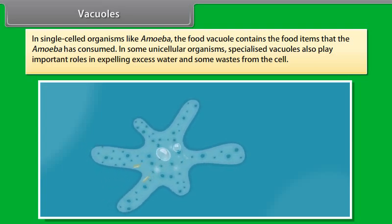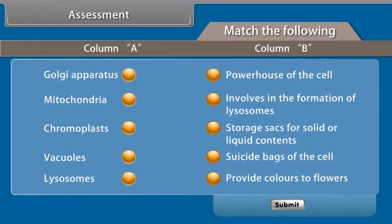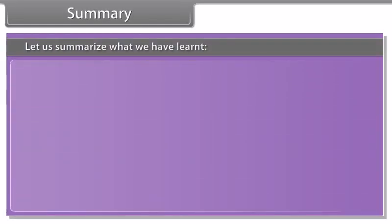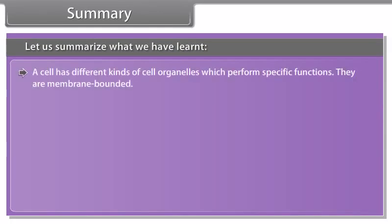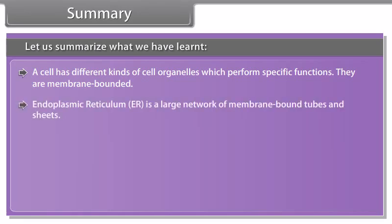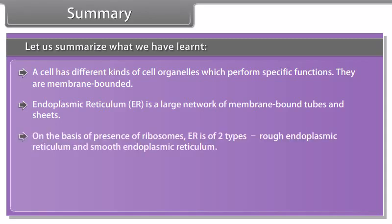Vacuoles are storage sacs for solid or liquid contents. In animal cells, the size of vacuoles is small, while plant cells have very large vacuoles. The central vacuoles of some plant cells may occupy 50–90% of the cell volume. In plant cells, vacuoles are full of cell sap and provide turgidity and rigidity to the cell. Many important substances for life are stored in vacuoles, including amino acids, sugars, various organic acids, and some proteins. In single-celled organisms like amoeba, the food vacuole contains food items that the amoeba has consumed. In some unicellular organisms, specialized vacuoles also play important roles in expelling excess water and some wastes from the cell.